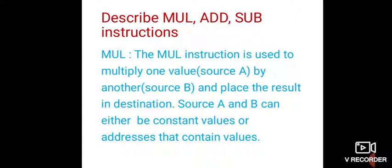The first question is: describe the Multiply, Add, and Subtract instructions. The multiply instruction MUL is used to multiply one value stored in source A by another value stored in source B, and the result of the multiplication is placed in the destination. During multiplication, both source A and source B can be either constant values or addresses of memory locations where the values are present — that is, directly or indirectly.